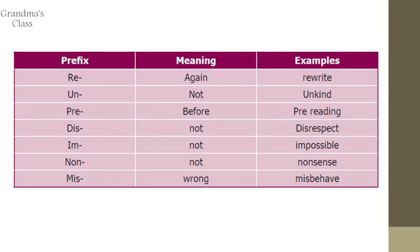Now look at the next tabular column showing prefix, meaning, and example words. 'Re' means 'again' — example: rewrite. 'Un' means 'not' — example: unkind, meaning not kind.